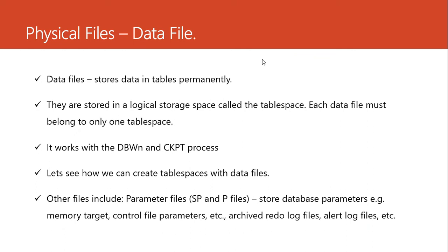Apart from the data file, control file, and redo log file, we also have other files like the parameter files, which store all parameters and database settings. These include the SPFILE and the PFILE — the ones you have seen being manipulated. When we say ALTER SYSTEM SET CONTROL_FILES = ..., we are making a change in system parameters. These parameters and settings are stored in the parameter files.